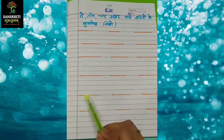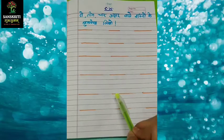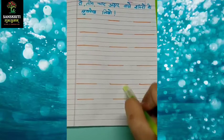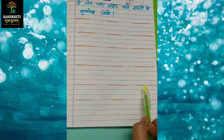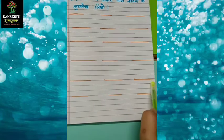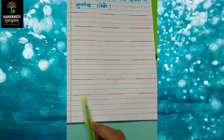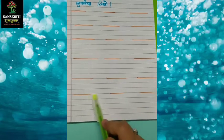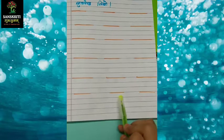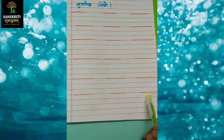उसके बाद यश, फिर लिखेंगे सरहद, क्या लिखेंगे — सरहद। फिर लिखेंगे बाताख। अब लिखेंगे अनवर, क्या लिखेंगे — अनवर। फिर लिखेंगे अवसर, फिर क्या लिखेंगे — मांटर।